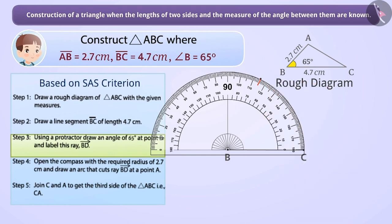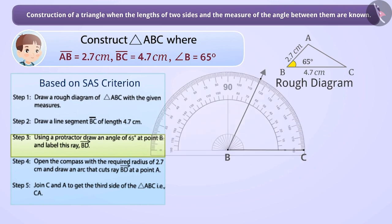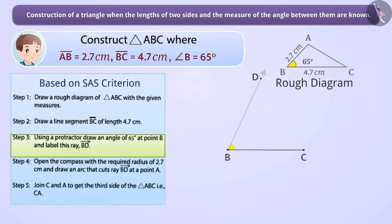We will label the ray BD. The ray BD makes an angle of 65 degrees with the line segment BC. The point A must be somewhere on this ray of the angle and we have to determine the exact location of point A on ray BD.